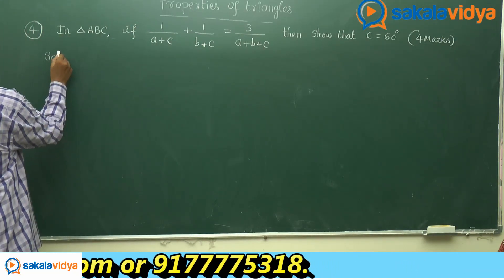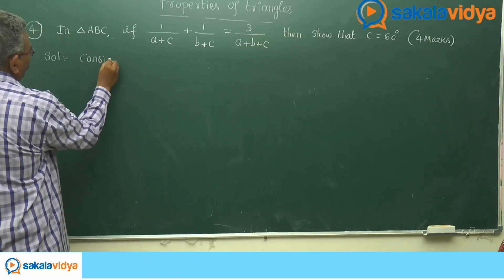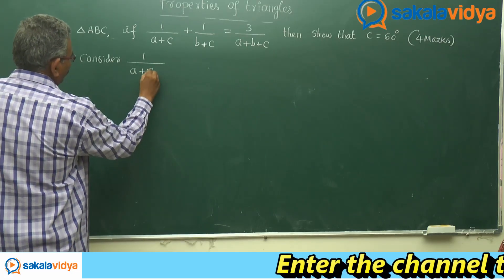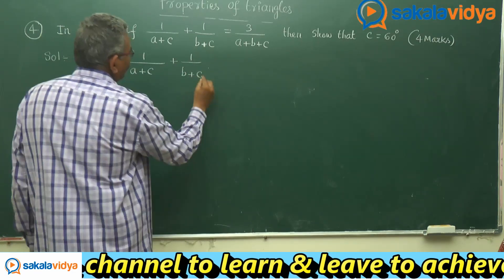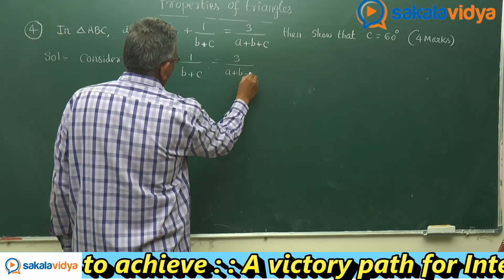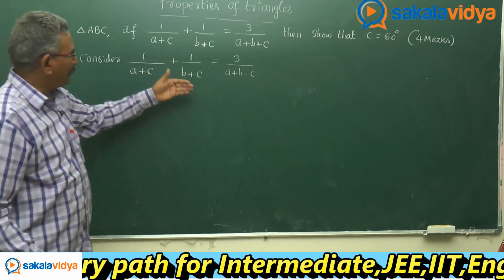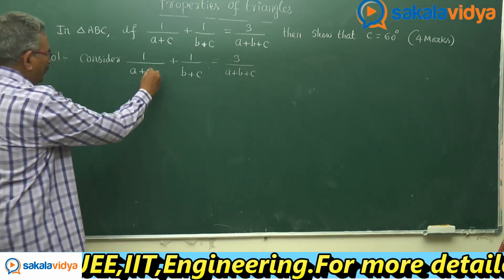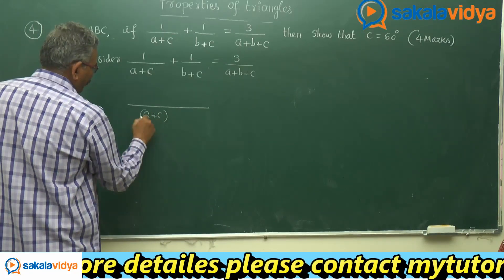Now consider 1 by A plus C plus 1 by B plus C equals to 3 by A plus B plus C. Here, take LCM as A plus C multiplied by B plus C.